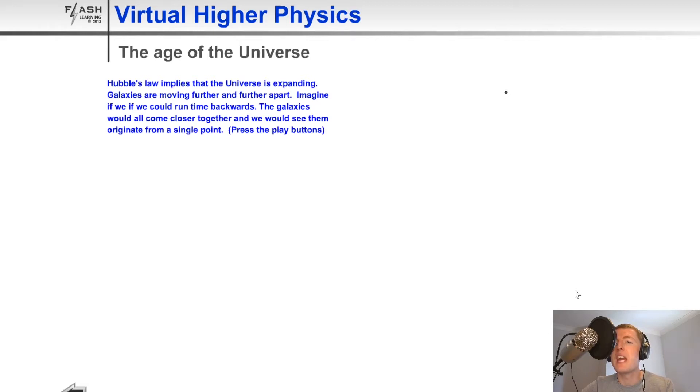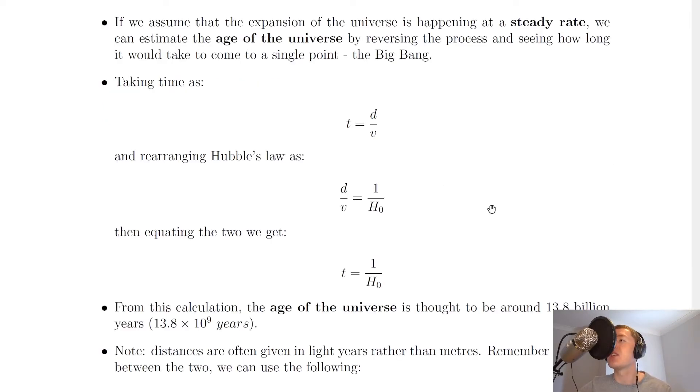Eventually it would get to a very small point like that, which we call the singularity. The singularity is thought to be what the Big Bang started as. This was an infinitely hot, infinitely dense point which was thought to rapidly expand.